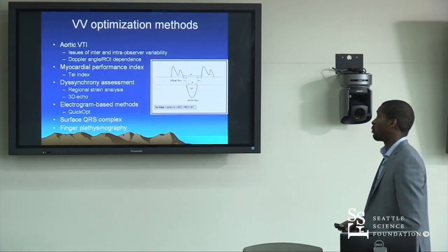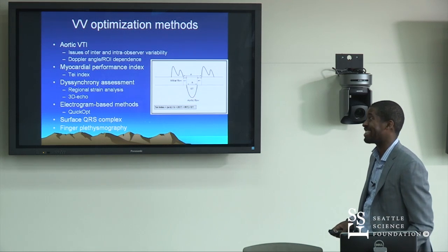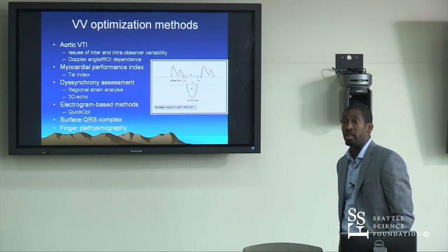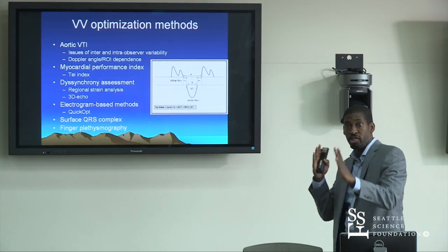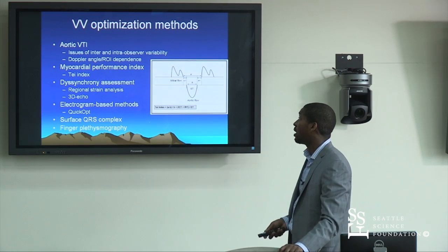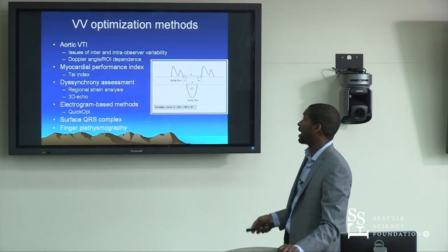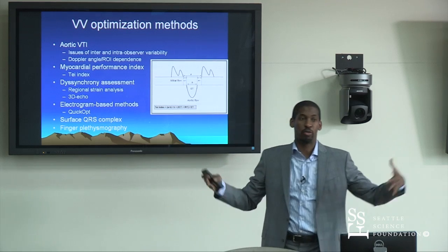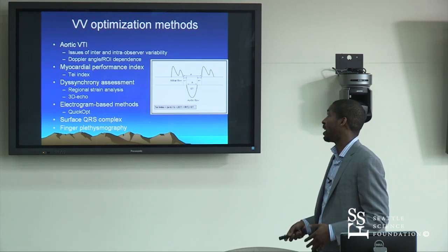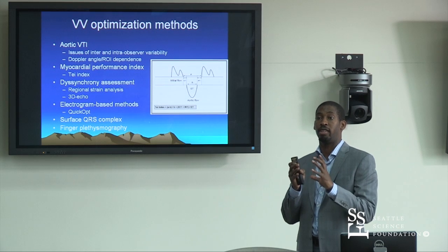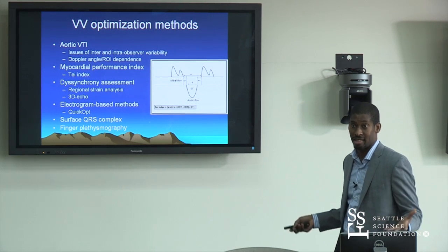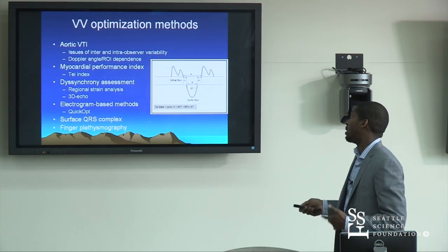VV optimization is more controversial — it's hard to show significant clinical benefit, and echo parameters used to optimize RV versus LV timing have not shown clinical benefit in randomized trials. Some folks are now re-looking at this using strain echo. The new Philips machines with strain packages use speckle tracking which has no angle dependence, unlike tissue Doppler — this really limited our ability to reproducibly assess synchrony on echo. Stay tuned; there's going to be a new wave of literature with these methods that may show improvement.